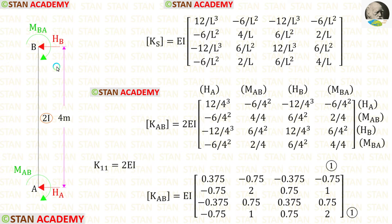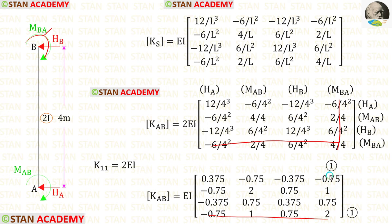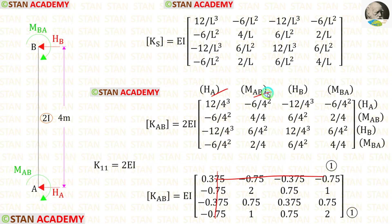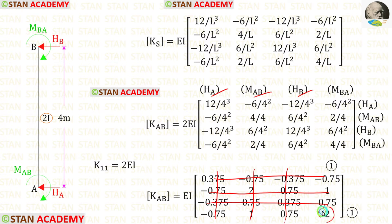Our first coordinate is at point B, where we have moment MBA. In the matrix, MBA represents the fourth row and fourth column, so we denote that position as 1. We strike out the unwanted rows and columns: row/column 1 (HA), row/column 2 (MAB), and row/column 3 (HB). In the matrix we now have only one member, K11. With EI outside, K11 equals 2EI.